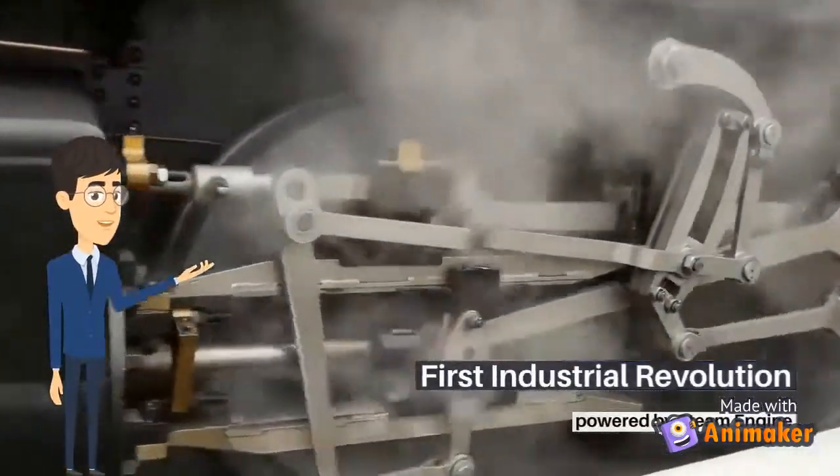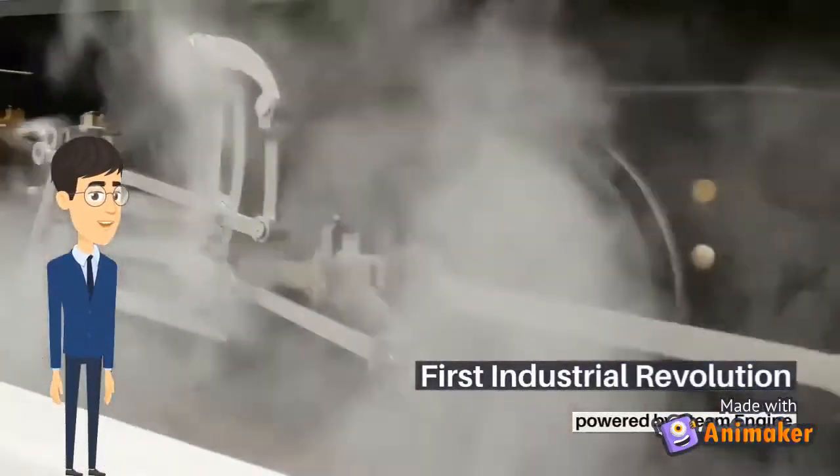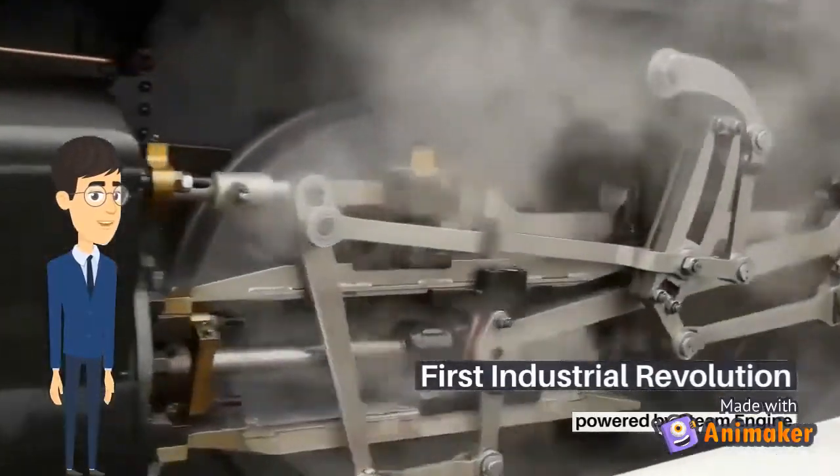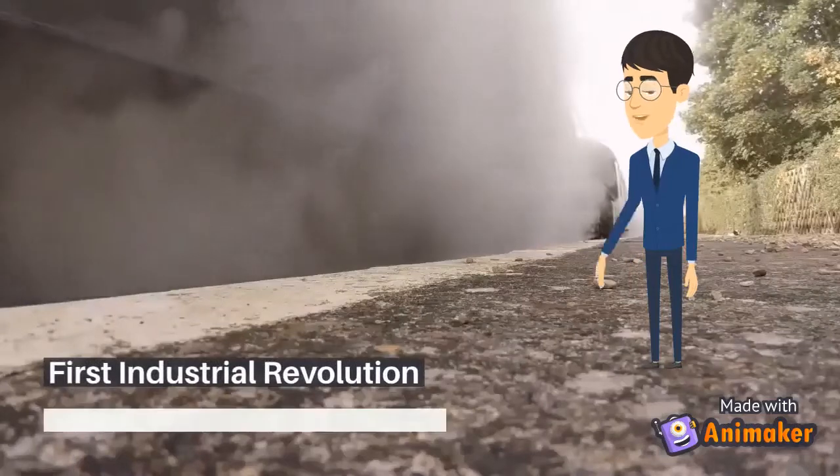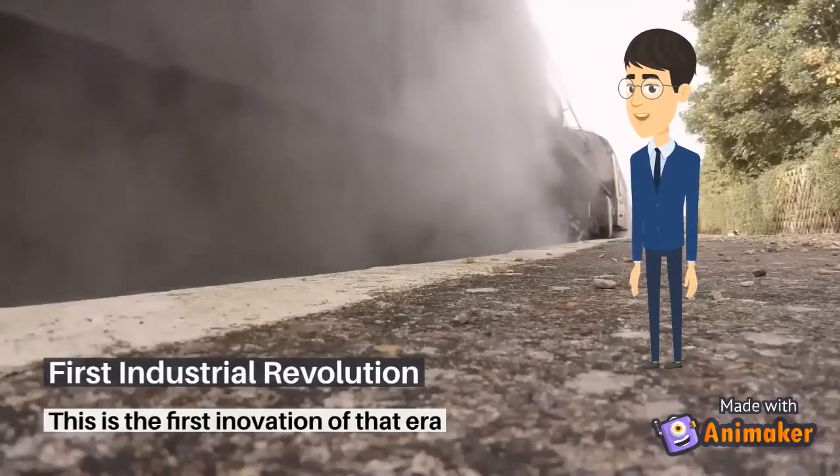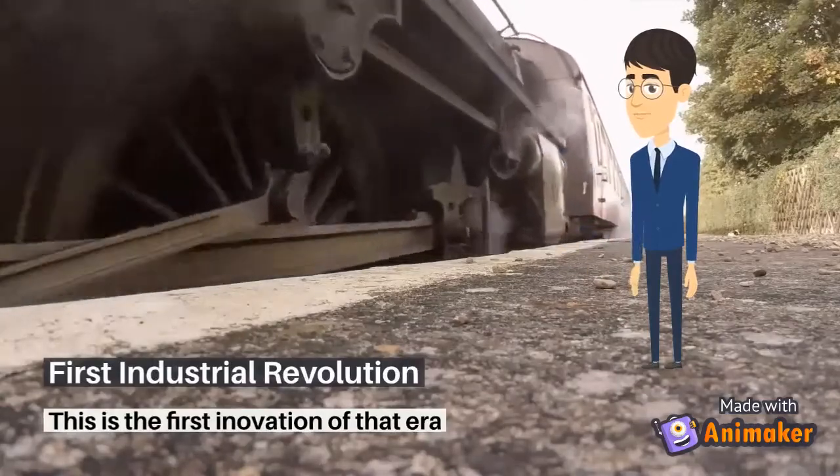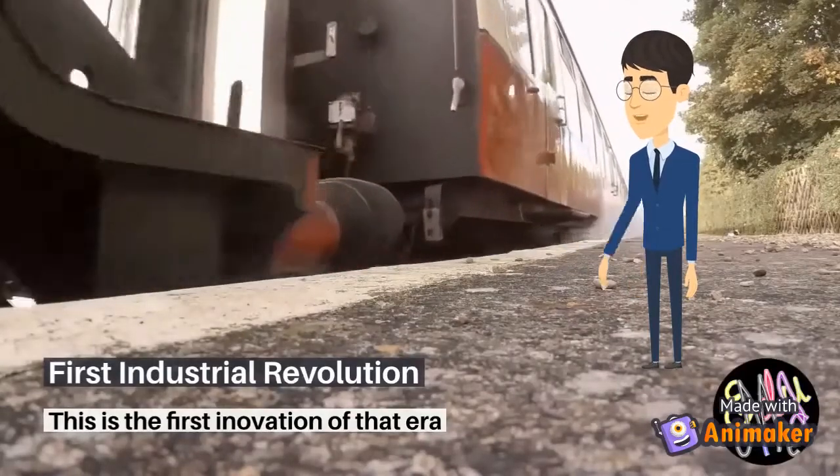The Industrial Revolution, now also known as the First Industrial Revolution, was the transition to new manufacturing processes in the period from about 1760 to sometime between 1820 and 1840. This revolution was powered by the steam engine. This was the first industrial revolution.